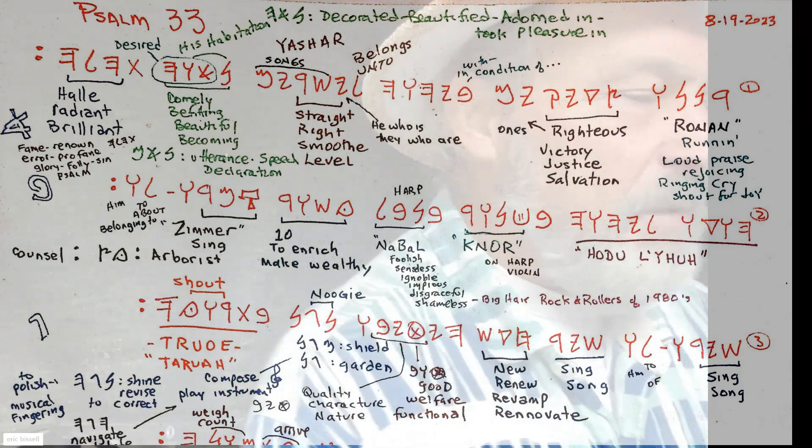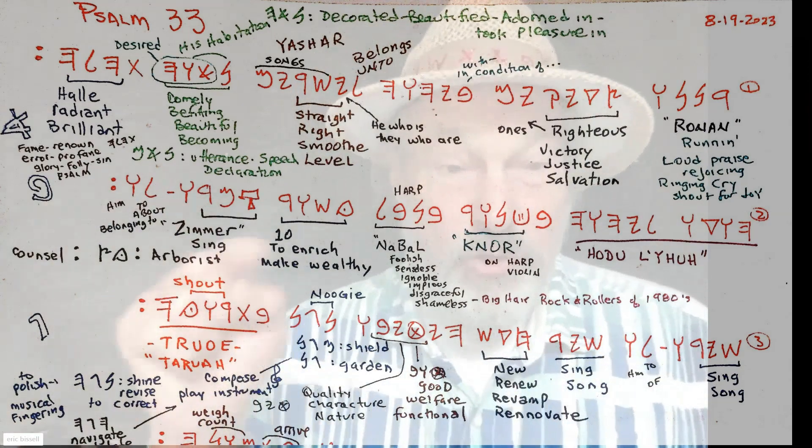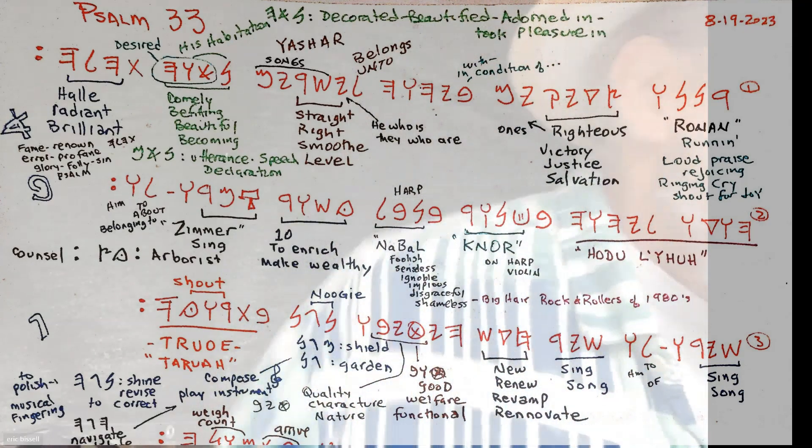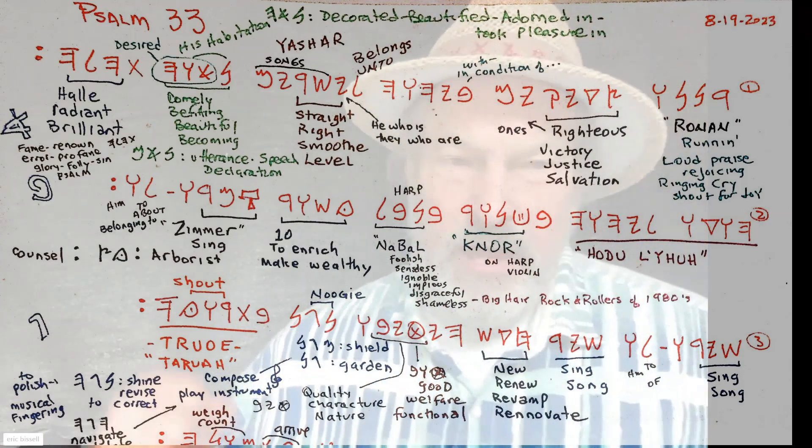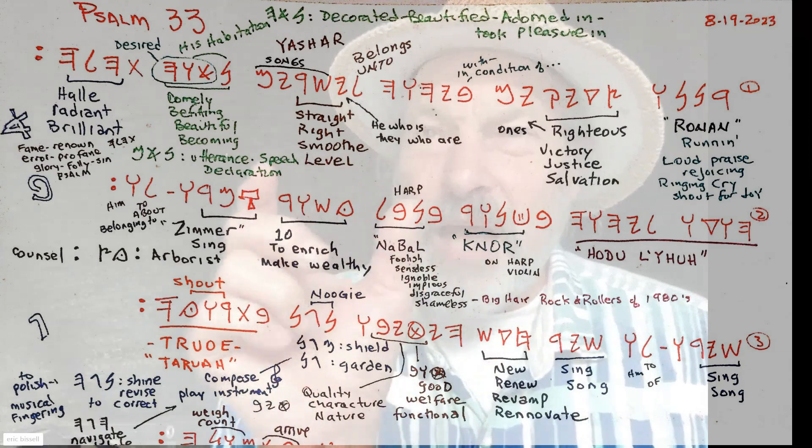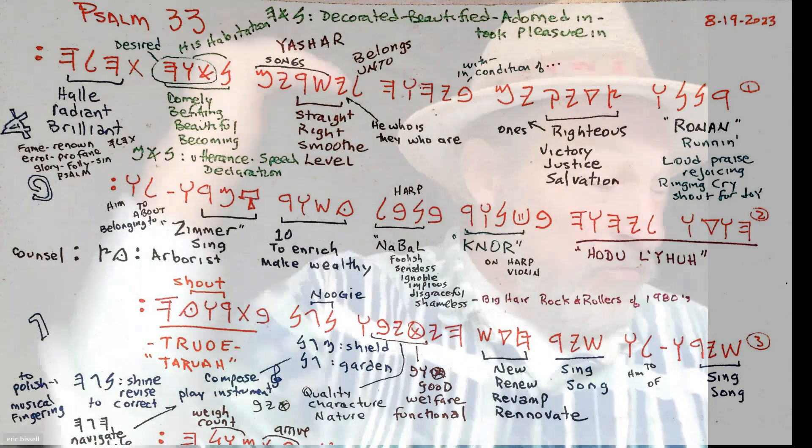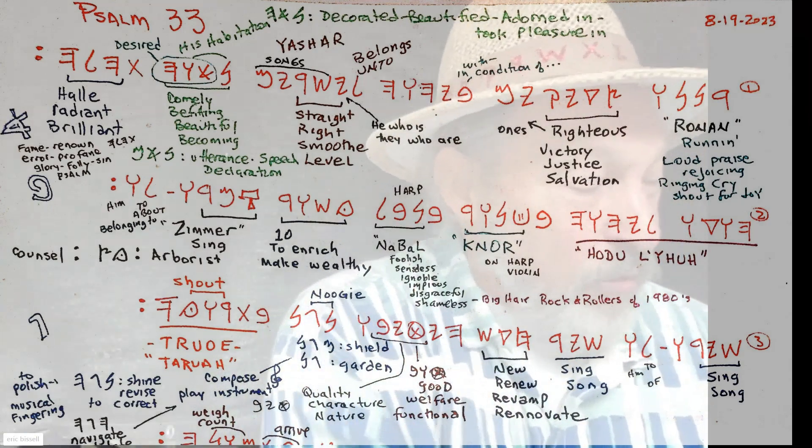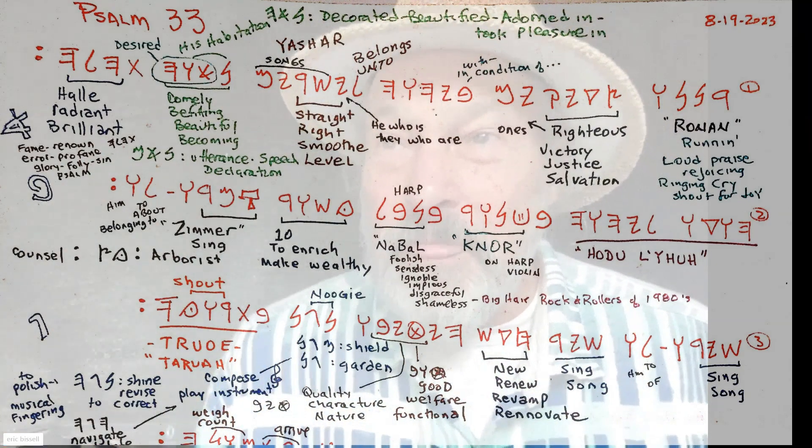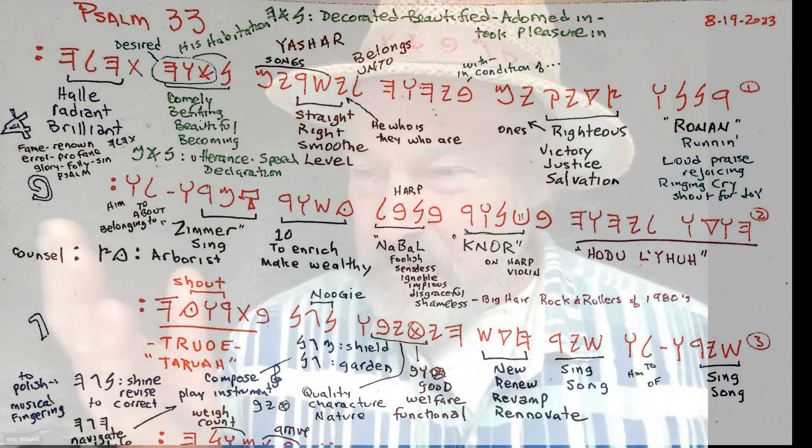Ranano: resh nun nun. Resh nun is a ringing cry, a shout of joy. You double the second letter—it's all the same thing: loud praise, rejoicing, ringing high cry, shout for joy. Tzadikim—well, tzadik means the righteous ones, but it's also victory, deliverance, salvation, and justice. So you could say: shout for joy, justice, victory for the righteous ones by Yahweh.